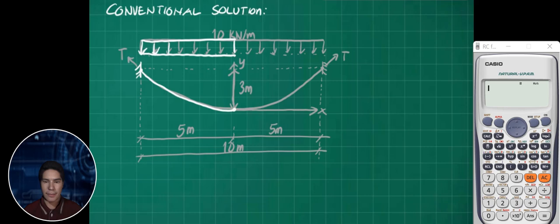The uniformly distributed load is 10 kN per meter at a distance of 5 meters. We have the tension here and then the distance of 3 meters. We have horizontal tension at the lowest point and then tension at support.